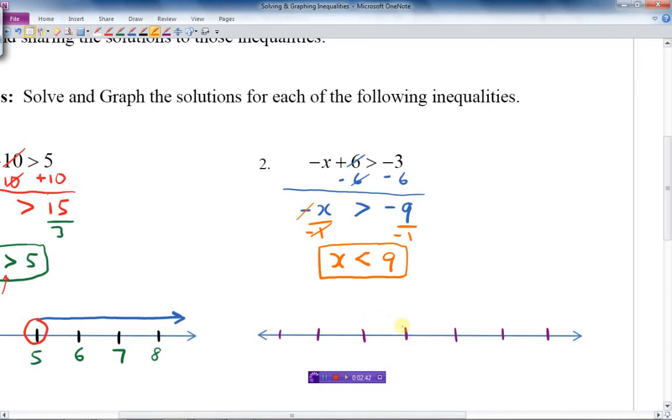Now I'm going to graph it. Let's put a 9 here, 10, 11, 12, and then we go down. We're going to put a circle at the 9. It's an empty circle because there's no line under it. And it's going to go to the left because that's the way the arrow is pointing in my symbol. It's pointing to the left, so I go to the left, put an arrow on that. Number two is done.